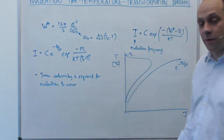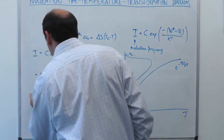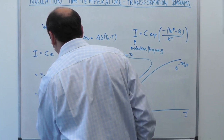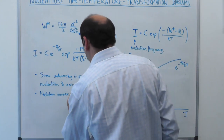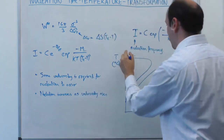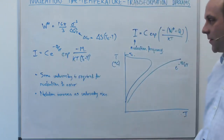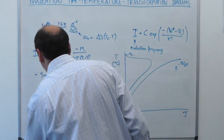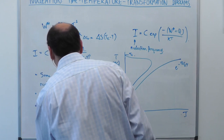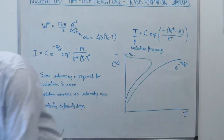The frequency of nucleation goes to zero when we get to TE. As we get cooler and the undercooling gets bigger, nucleation increases in frequency. But eventually the diffusivity drops and nucleation stops happening. So that's the nucleation story.